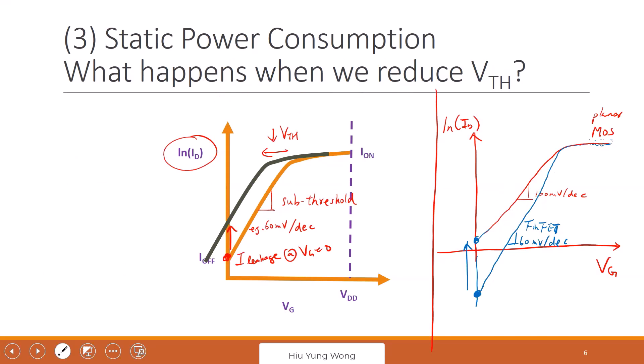Someone asked if we can go lower than 60 mV/decade — yes, with something called a tunnel FET or tunneling electric device, that is possible, but it's not a typical MOSFET. We will skip that in this class. Please keep sub-threshold slope imprinted in your brain. In the future when you discuss with a foundry or device engineer, you'll know what to say.